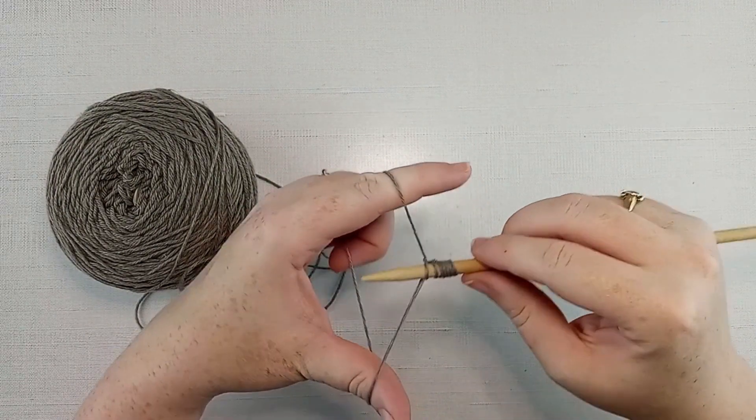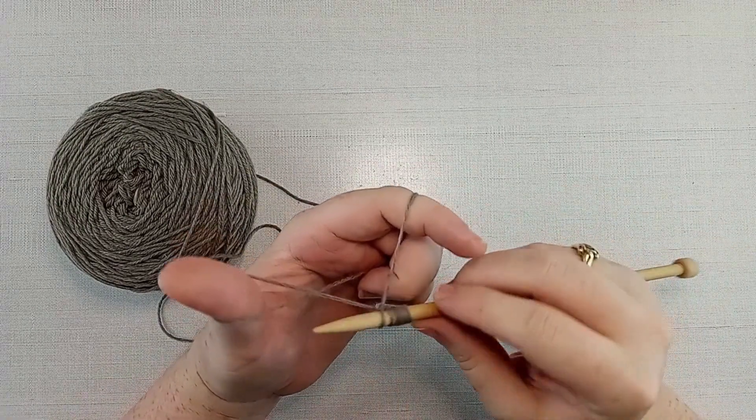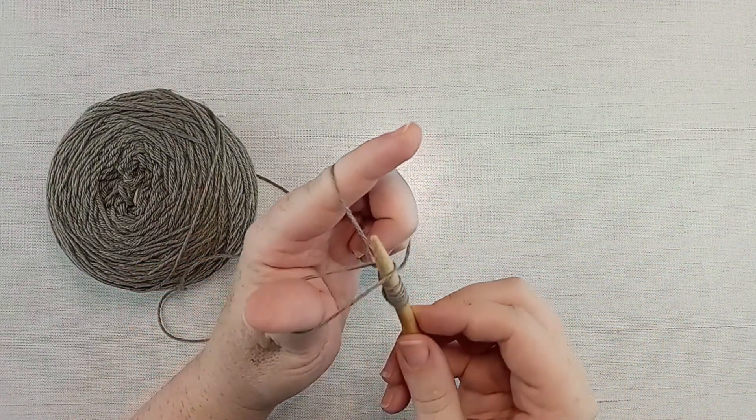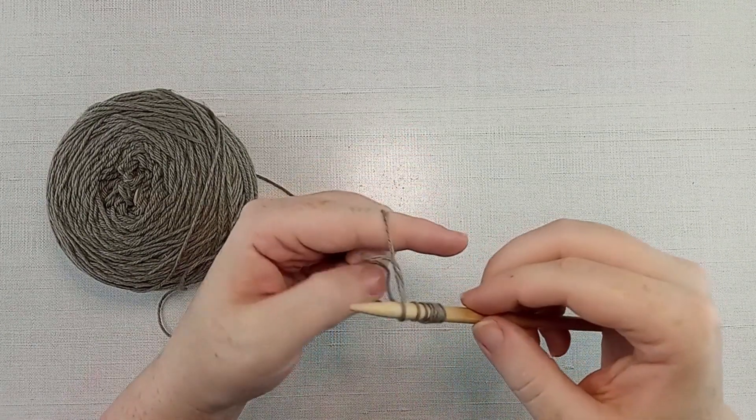One more time. Thumb up, point of your needle up through that hole, grab that working yarn, and tighten.